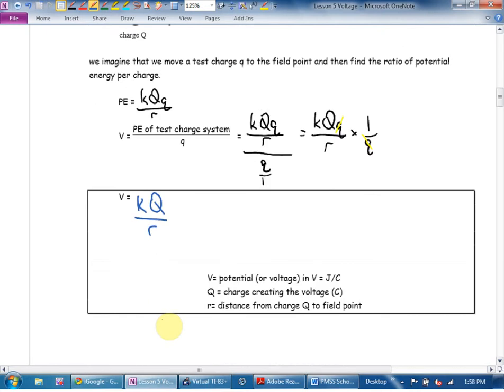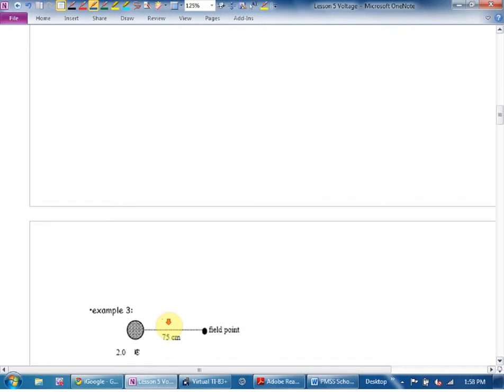And again, the bad news is when you look at your formula sheet, the first equation, the second equation, the first one on the third row, the first one on the fourth row look a lot alike. Well, keep them straight. Let's try some. Example 3.